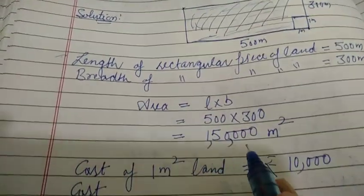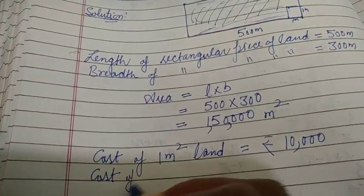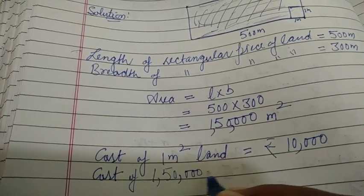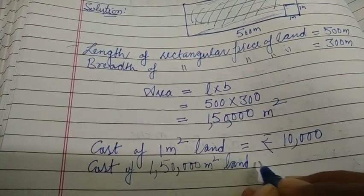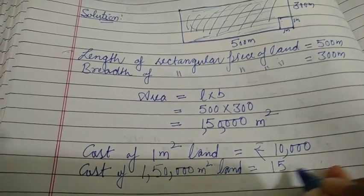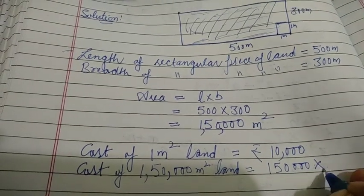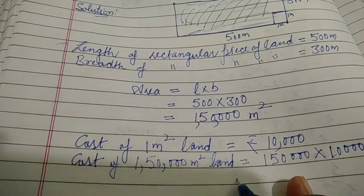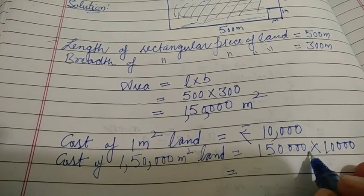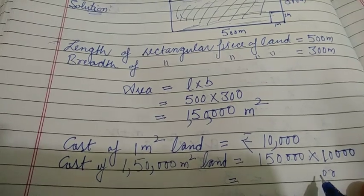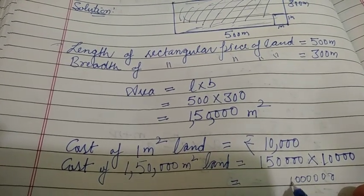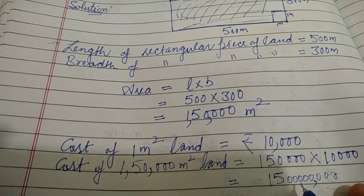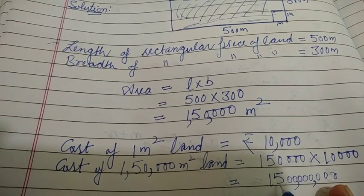We want to purchase the whole area, so cost of 1,50,000 square meters of land will be 1,50,000 multiplied by 10,000. There are eight zeros in total — one, two, three, four, five, six, seven, eight — and 15 ones are 15. So the total cost is 1,500,000,000 rupees.